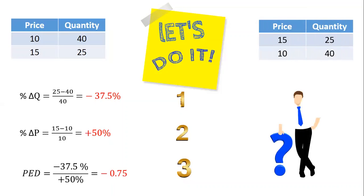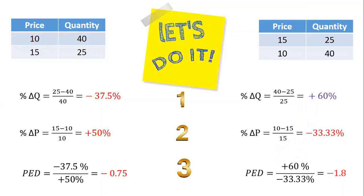Now let's take the same numbers but go in the opposite direction — from a price of 15 to 10 with the same quantity change. Do you think we'll get the same result? The answer is no, because the initial value used as the denominator changes. The percentage change in Q becomes 60%, and the percentage change in price becomes −33.3%, giving an elasticity of −1.8. So the direction we travel between two points affects the result.